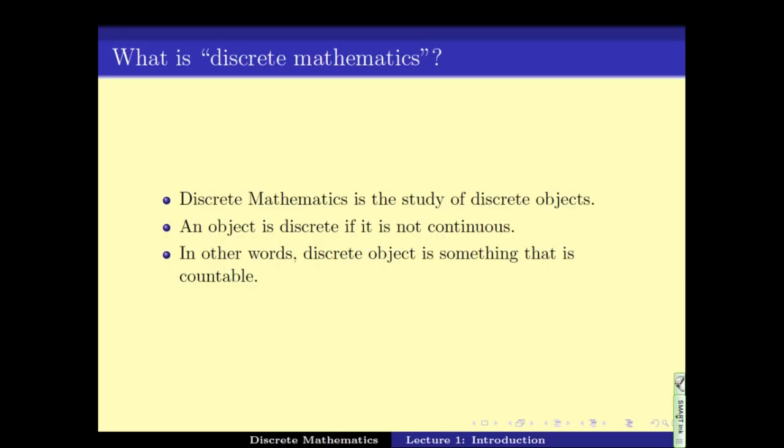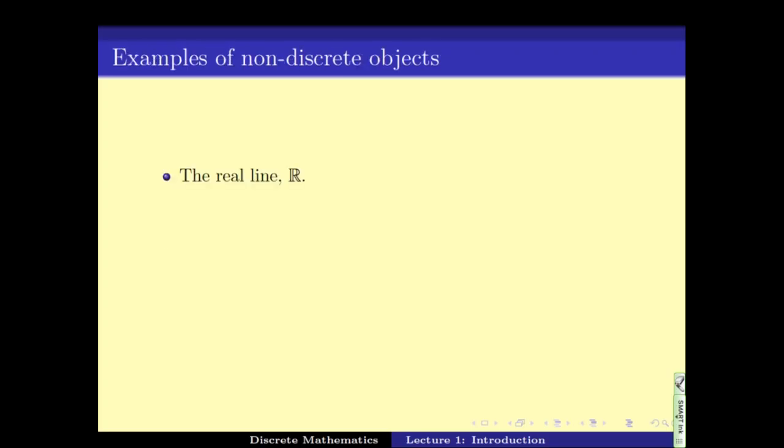So let's see some examples of objects that are not discrete. One such example is the real line, R. Real line, meaning all the numbers starting from minus infinity to plus infinity, the set of real numbers form a continuous spectrum. And hence it is not a discrete object.